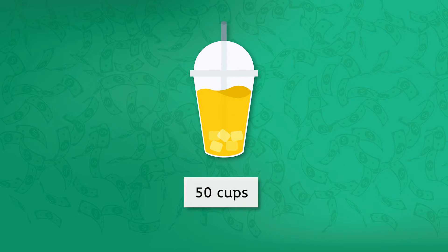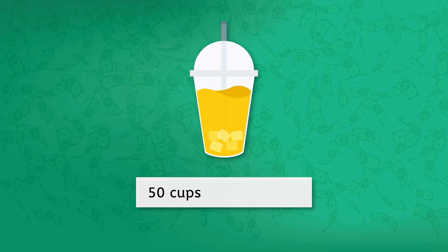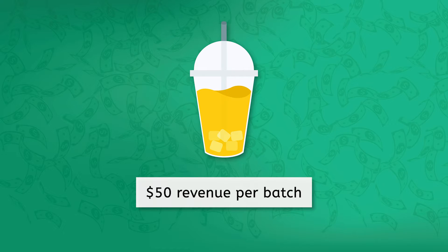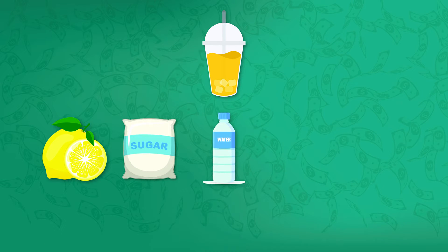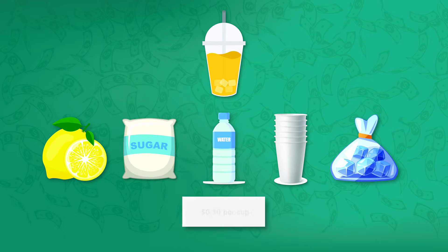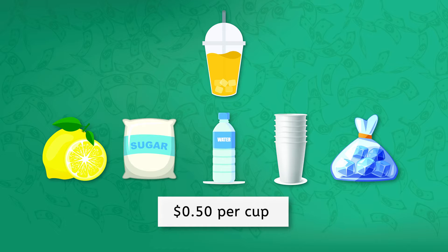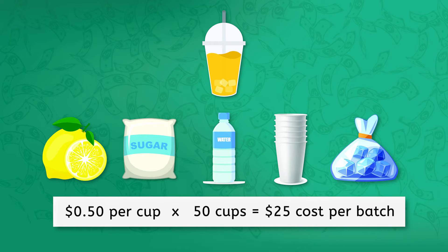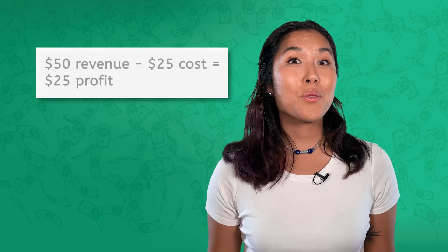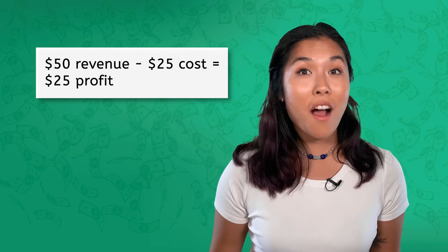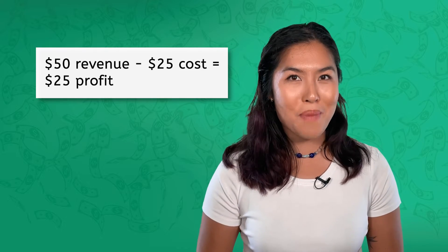Mia sold her first batch of 50 cups of lemonade at a dollar per cup. How much revenue did Mia get? Fifty dollars, right? And between lemons, sugar, water, cups and ice, it costs Mia fifty cents to make each cup of lemonade — twenty-five dollars to make a batch that yields fifty servings. Using our profit formula, Mia would profit twenty-five dollars on that batch.